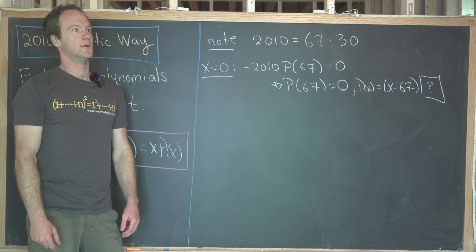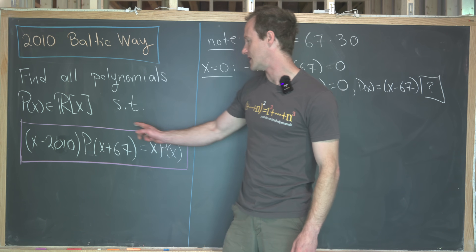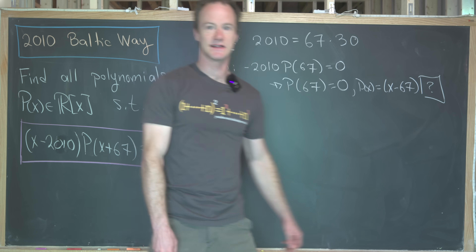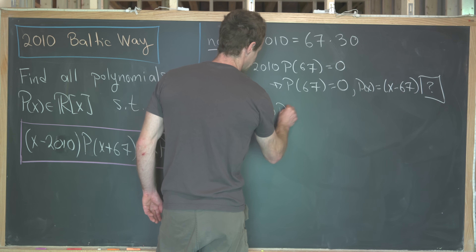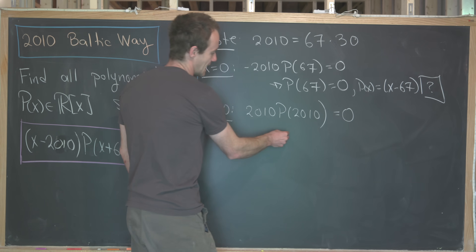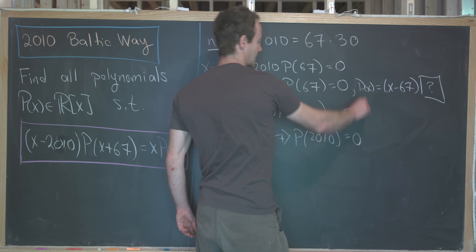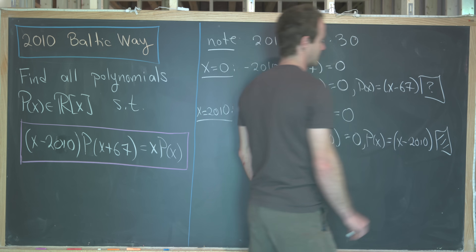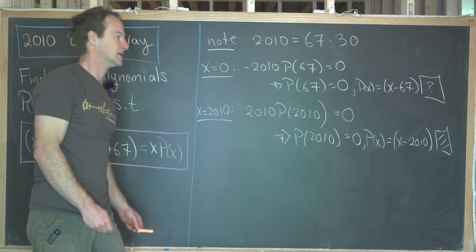Let's see if there's another obvious value we can plug into this functional equation. If we look at the left-hand side, we see that plugging in x equals 2010 zeros out that factor, leaving zero on the right-hand side. So x equals 2010 gives us 2010 times p(2010) equals zero. That implies p(2010) equals zero, and using the same logic, p(x) equals (x minus 2010) times something.